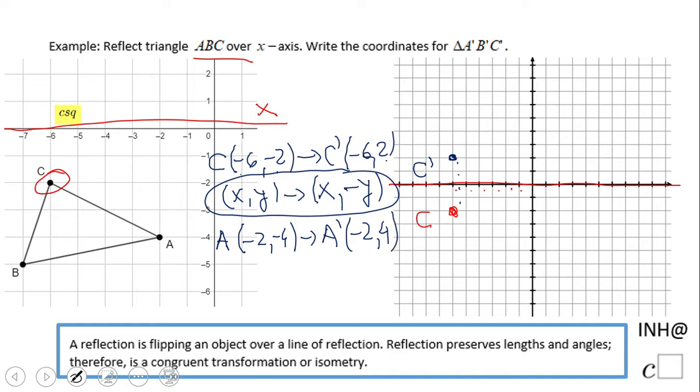What about the last one, point B? Point B, which is (-7, -5), will become B', which is (-7, 5). Negative seven stays, negative five changes to positive five. That's it. You can plot the points and you're going to see a nice reflection.